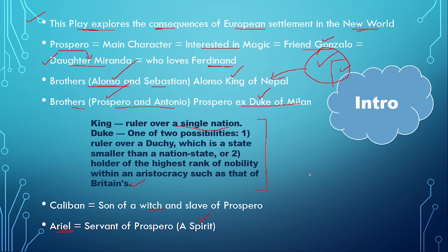We have seen in critical analysis that some critics describe Ariel as an ideal spirit for the Jacobean audience. At that time, spirits were imagined in that way.